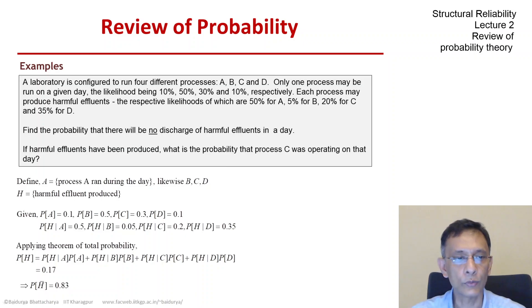Now the second part of the question asks that if harmful effluents have been produced what is the probability that process C was operating? So let's interpret the question in terms of probability.